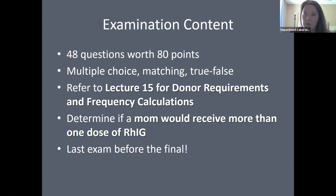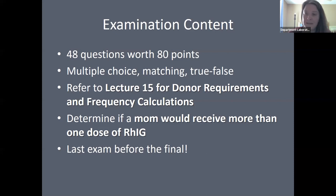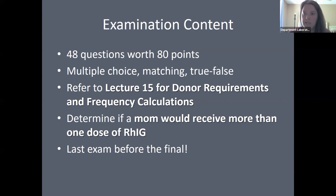Make sure you can identify if mom should receive RhoGAM. Any RH negative mom is given RhoGAM at 28 weeks gestation — we don't know the baby's type at 28 weeks, so every RH negative pregnant female receives an antenatal dose. If upon delivery she delivers an RH positive baby, she should receive a postnatal dose of RhoGAM within 72 hours from delivery.